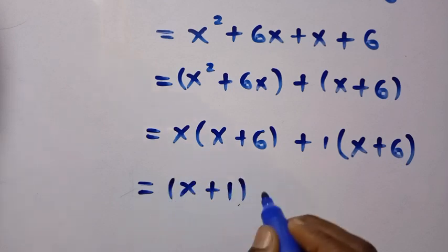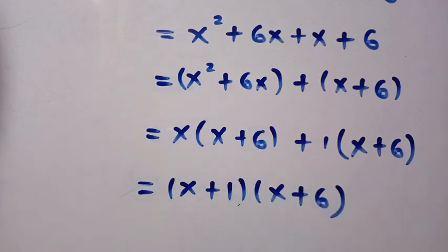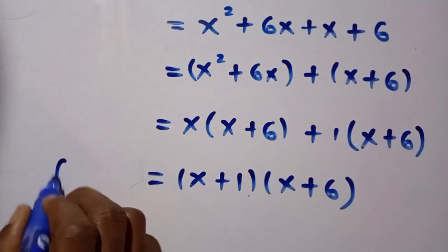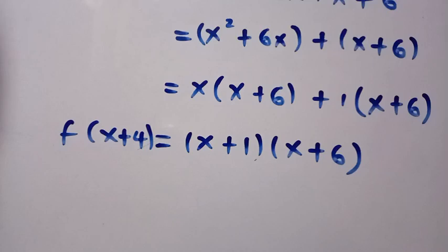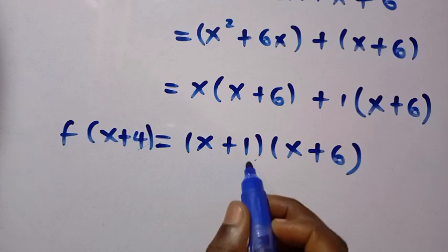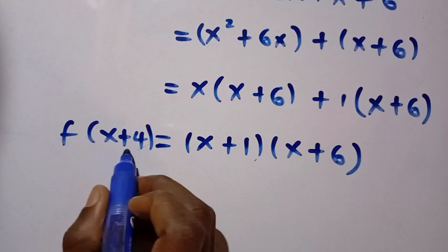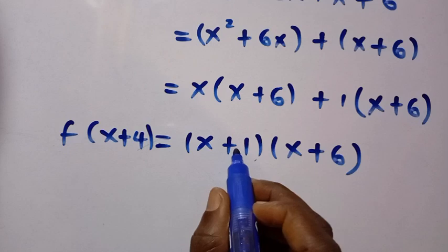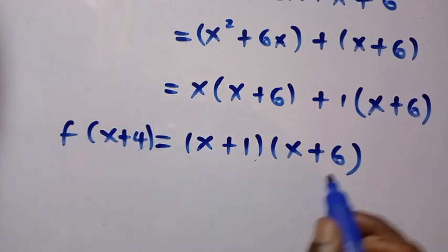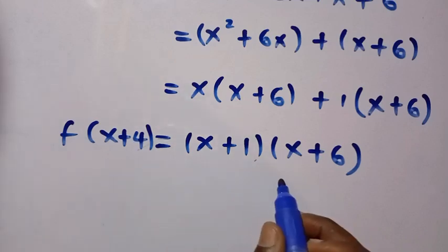So we get the complete factorization: (x+1)(x+6). This equals f(x+4). We are asked to find f(x-4), but here we have f(x+4), so these are not the same. We need to manipulate the domain x+4 so that it resembles x-4 — and similarly rewrite x+1 and x+6 in terms of x+4.